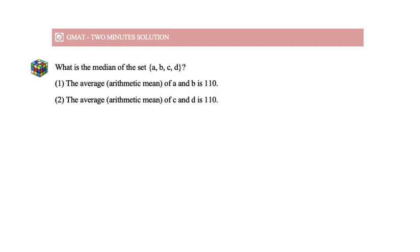This is a data sufficiency question of GMAT. First pause the video and try it on your own. We need the median of the set A, B, C, D. So we'll arrange them in increasing order and the median will be the average of the middle two numbers, whatever they are.